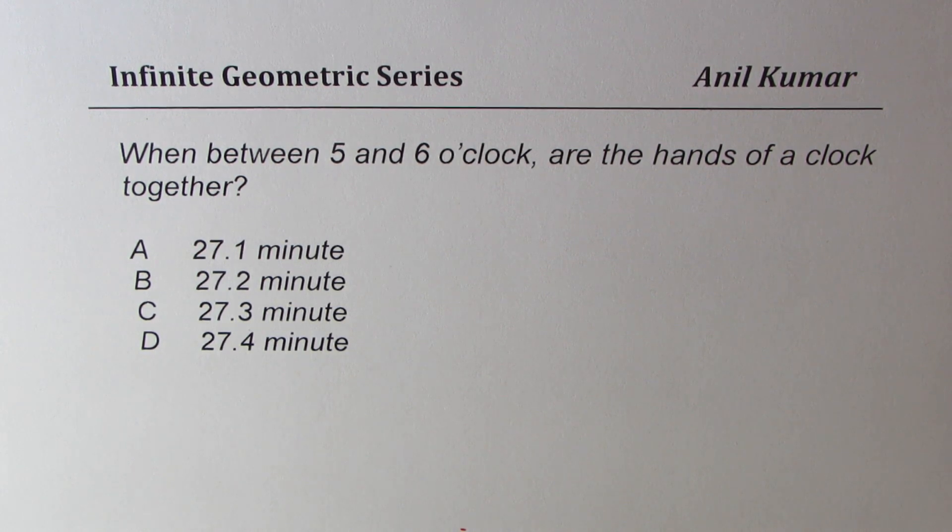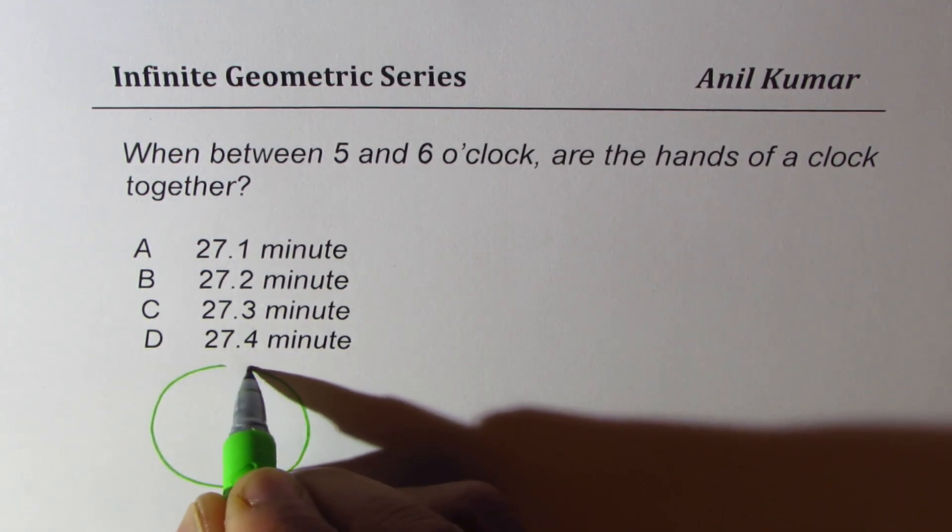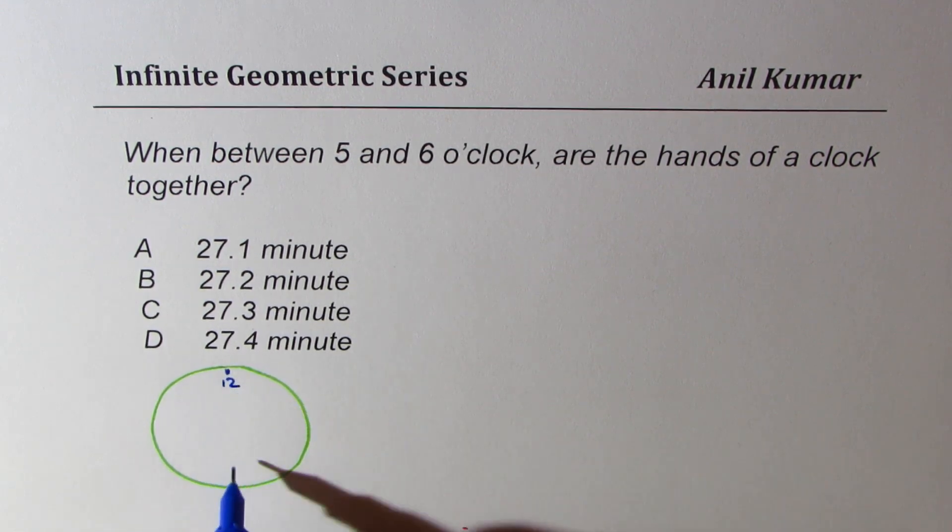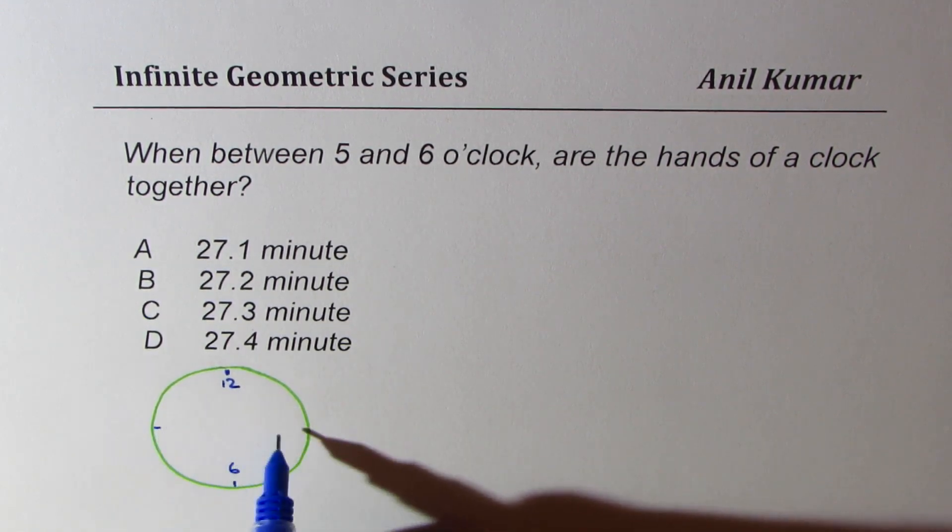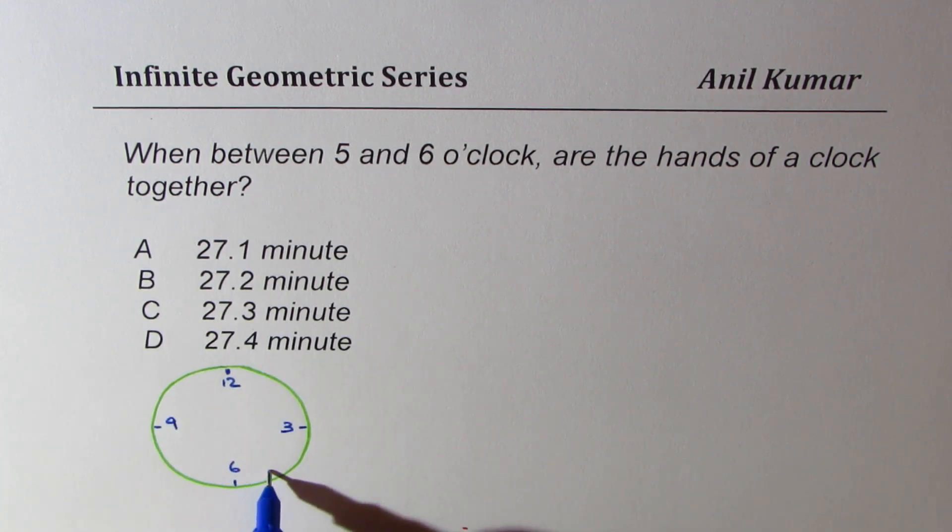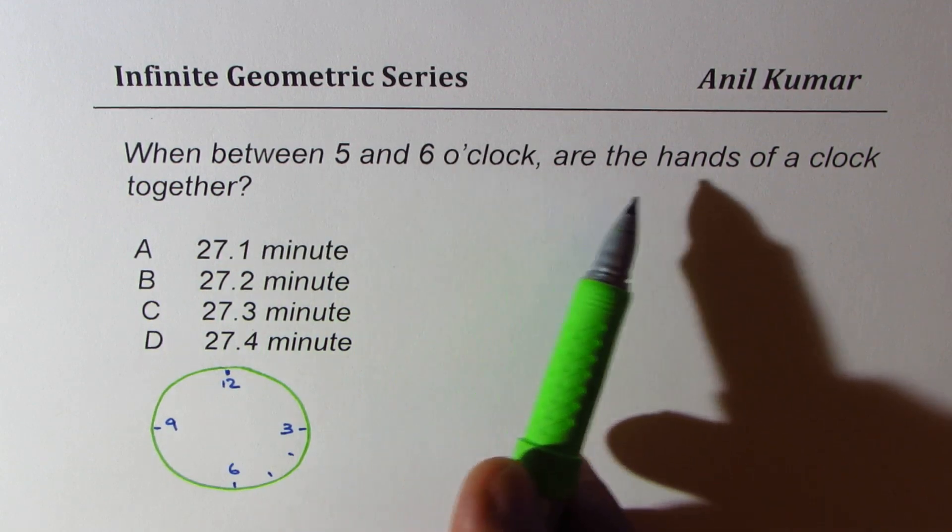Let's first try to understand the question itself. So let's say this is our clock where five and six o'clock really means that, so that is 12 and this is 6, so we are 3 and 9. So somewhere here could be 5, that could be 4.